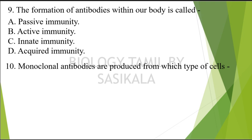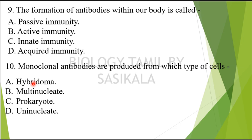Question 9: Monoclonal antibodies are produced from which type of cells? The choices are: hybridoma, multinucleate, prokaryote, uninucleate. What type of cells produce monoclonal antibodies?